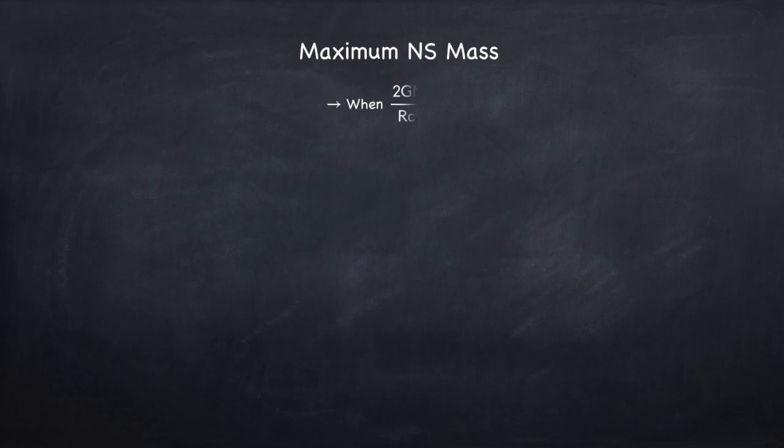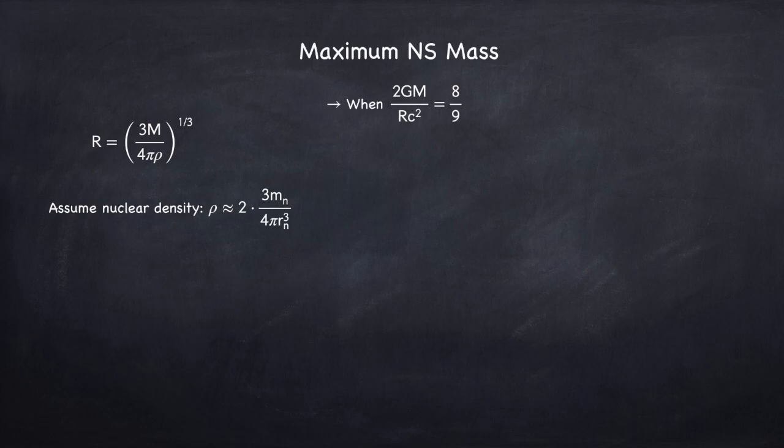Now that we know this criteria, we can find the maximum mass of a neutron star, which is when 2gm over rc squared equals eight ninths. Since we've assumed constant density, we can rewrite the radius in terms of the mass and the density. And we're going to assume that the density is nuclear density, because the star is just made up of neutrons.